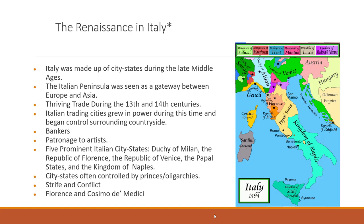Italians were often seen as the bankers of Europe—some even financed crusades. The most prominent banking family was the de' Medici. The very wealthy people in these city-states could be patrons, giving artists what they needed—materials, food, clothing, and compensation—allowing them to create freely. There were five prominent Italian city-states: the Duchy of Milan, the Republic of Florence, the Republic of Venice, the Papal States, and the Kingdom of Naples.